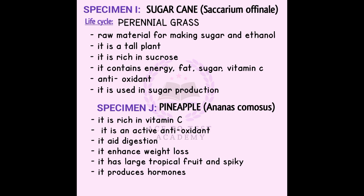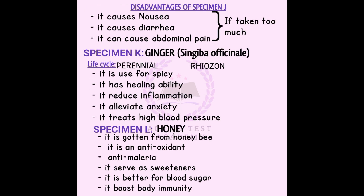Specimen J is pineapple fruit. Pineapple is rich in vitamin C and is an active anti-oxidant. It aids digestion and assists with weight loss. Pineapple is a large spiky fruit because its skin is spiky. It can cause nausea, diarrhea, and abdominal pain, but only if taken in excess.